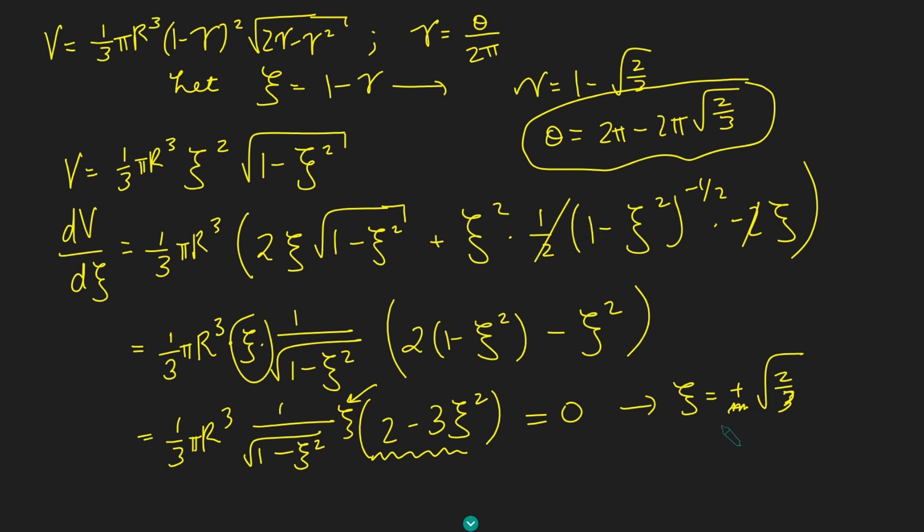What would the volume of our cone be? We can just substitute psi equals root 2 over 3 back into this expression over here. We get the max volume is equal to 1 third pi r cubed times psi squared, which will be 2 thirds, times square root of 1 minus 2 thirds, which is going to be root 3 over 3. To simplify this, this will just be 2 root 3 over 27 pi r cubed. That there is our final answer for the maximum that the volume can be if we're making cones in this way, of cutting out a sector from our circle and gluing those two edges together.